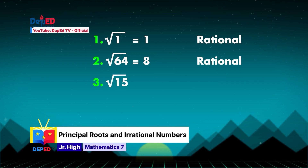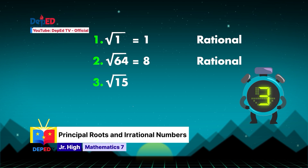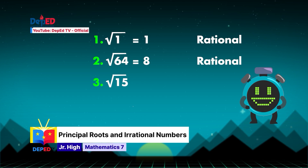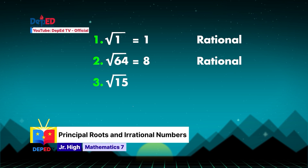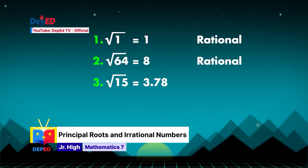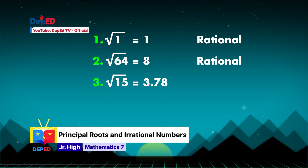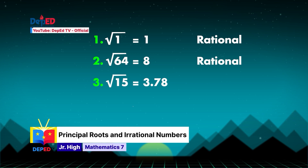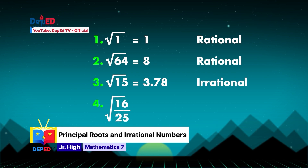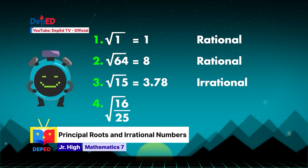Number 3: square root of 15. Timer! Raise your answer! Can you think of any number that when multiplied by itself will give an answer of 15? None! We can say then that 15 is not a perfect square. Therefore, the principal root of the square root of 15 is irrational. Number 4: square root of 16 over 25. Timer!